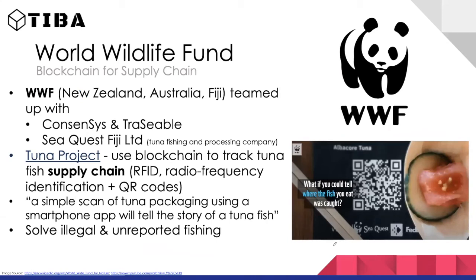The WWF uses blockchain to track tuna supply chains — called the Tuna Project, developed with ConsenSys. Each tuna gets a QR code containing the full history of where it came from. Scanning the QR code shows the provenance, which helps combat illegal and unreported fishing since each tuna has a unique ID that's hard to replicate.